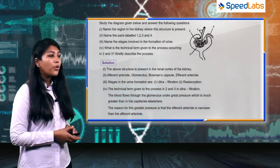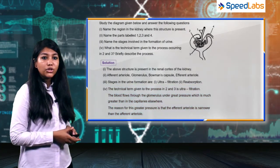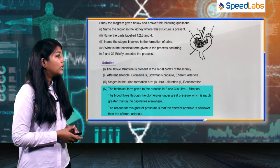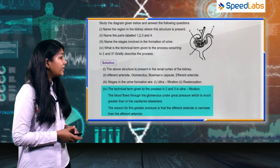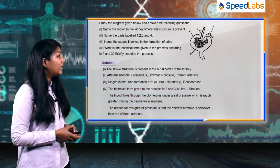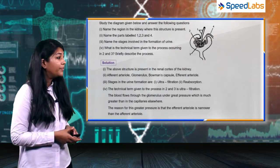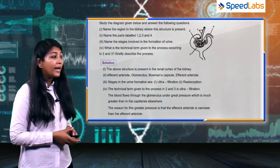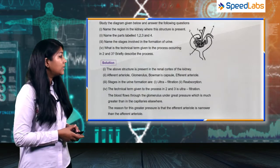The technical term is ultrafiltration. Blood flows through the glomerulus under great pressure, much greater than in capillaries elsewhere. The reason for this greater pressure is that the efferent arteriole